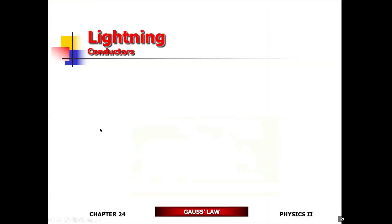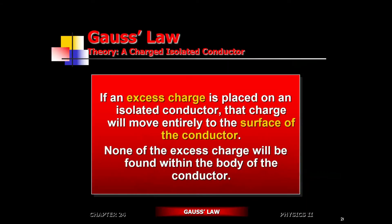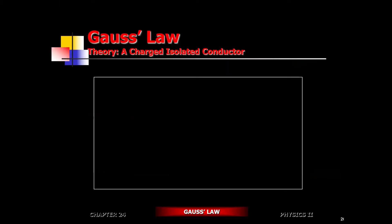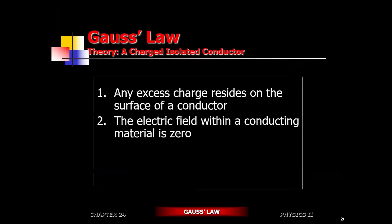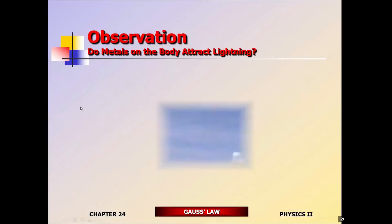Regarding lightning and conductors: we already mentioned that charges — whether positive or negative — will be repelled to the surface. So the excess charge remains on the surface, which means the field is zero on the inside. This is allowed because there's no net charge on the inside. Metallic enclosures are one of the best ways we can protect things from electrostatic discharge, provided you can place them inside these metallic enclosures.